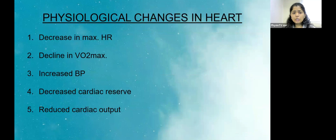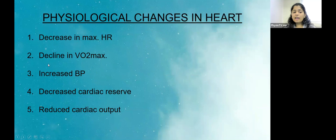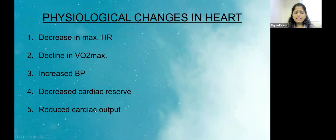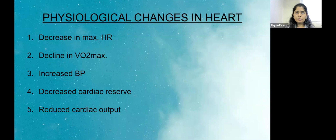The physiological changes occurring in the heart are a decrease in maximum heart rate, a decline in VO2 max, and increased blood pressure — adults typically have hypertension. There is also decreased cardiac reserve in elderly and reduced cardiac output. Cardiac output is the product of stroke volume and heart rate.